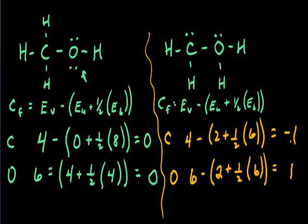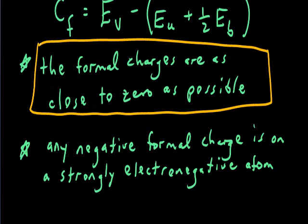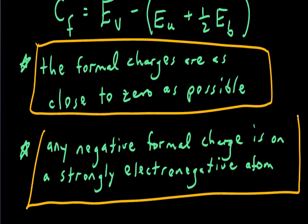Calculating the formal charge, we get a value of positive one for our oxygen atom in this Lewis structure. If our formal charges are as close to zero as possible on the atoms, that indicates the structure is more likely to be the real thing. And if we have any negatives, those need to be on our more electronegative atoms.